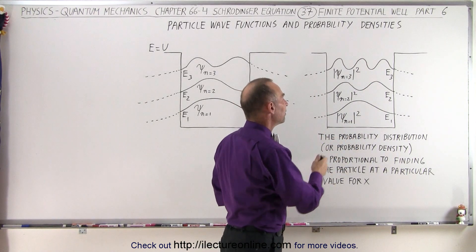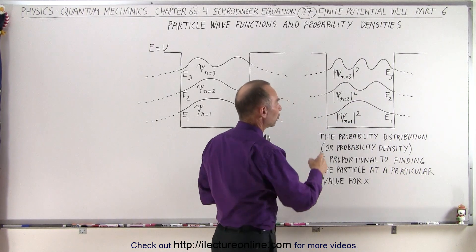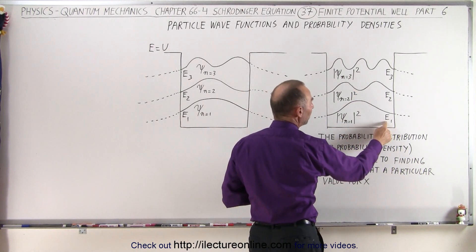But at least the shape of these functions are exactly the same as the shape of the probability of finding the particle in that particular location. So you can see for energy level 1, or for energy where n equals 1 we should say...